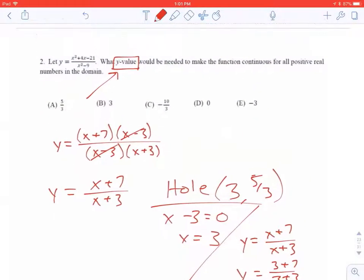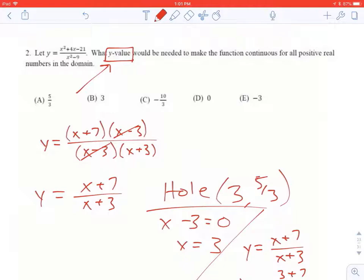To be clear, what y value would be needed to make the function continuous for all positive numbers in the domain? Well, since there's a hole in the graph at 3, 5 thirds, to plug the hole, the y value has to be 5 thirds.